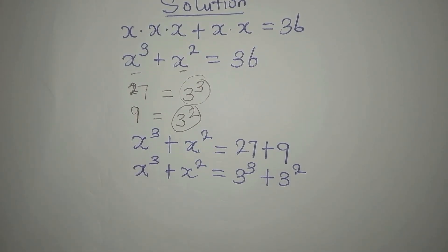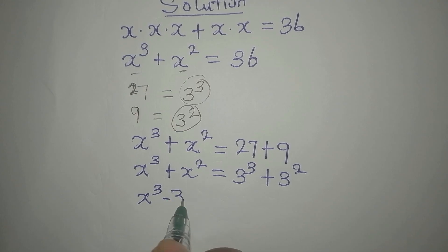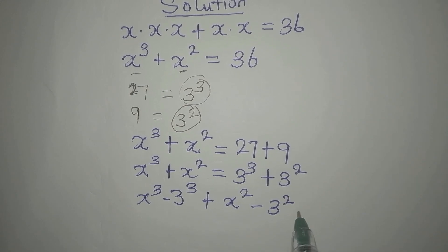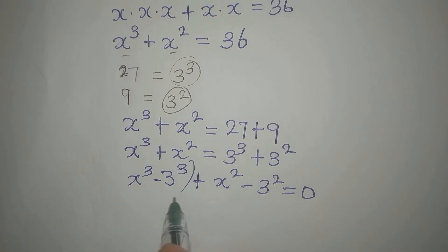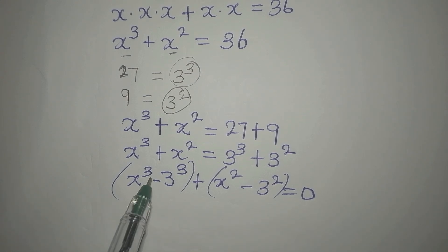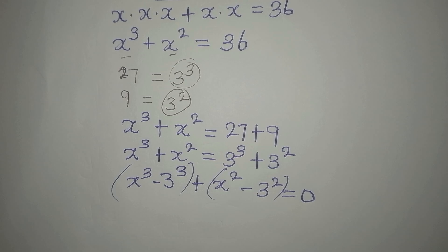Now let's rearrange: group this and this together, and this and this together. So we get x to the power of 3 minus 3 to the power of 3, then plus x to the power of 2 minus 3 to the power of 2, and everything equals 0. Here we apply the difference of two cubes and the difference of two squares.